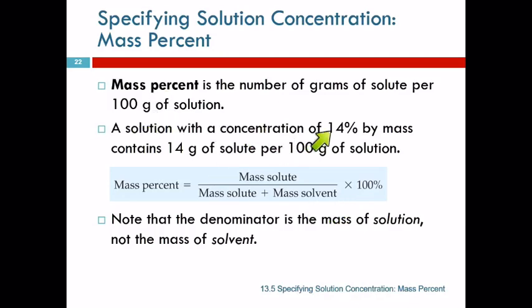So if we have a solution that has a concentration of 14% by mass, that means it has 14 grams of solute per 100 grams of solution. It's important to note that this denominator is the mass of the whole solution and not just the solvent.